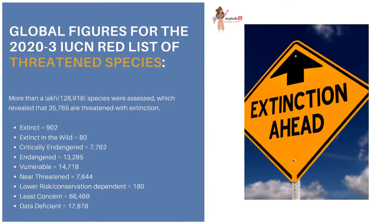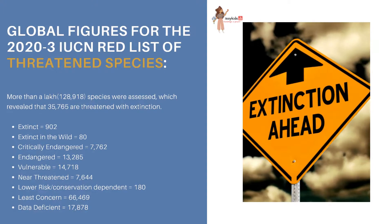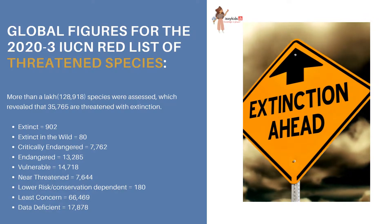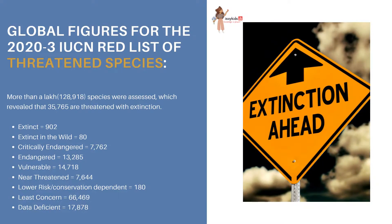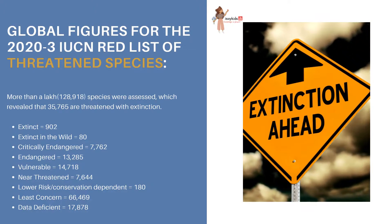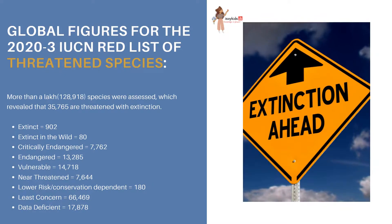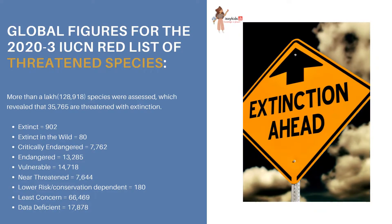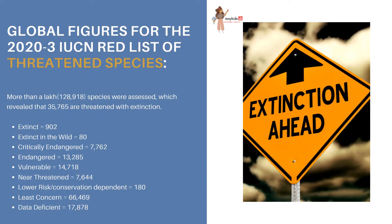Let's see some facts. Global figures for the 2023 IUCN Red List of Threatened Species say that more than one lakh species were assessed, and more than 35,000 species are threatened with extinction currently. More than 900 species are now extinct. Around 80 are extinct in the wild. Around 7,000 are critically endangered, 13,000 endangered, and 14,000 vulnerable. More than 7,000 are near threatened.